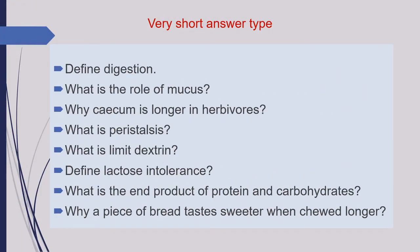The first question of this category is: define Digestion. Second is: what is the role of mucus? Third is: why is the cecum longer in herbivores? Next question is: what is peristalsis? Next is: what is limit dextrin?